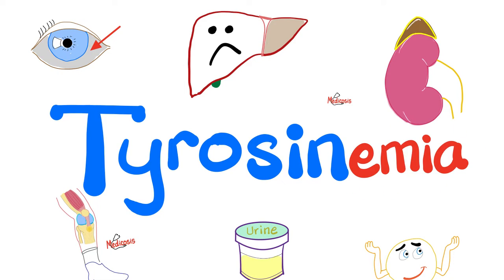What does 'emia' mean? Blood. And who's tyrosine? One of the amino acids. Tyrosinemia is an ugly disease that can lead to liver failure. If it's not diagnosed and managed properly, liver failure over the course of years and years can lead to liver cancer. Liver and kidney — when one of them is upset, the other is unpleased as well.